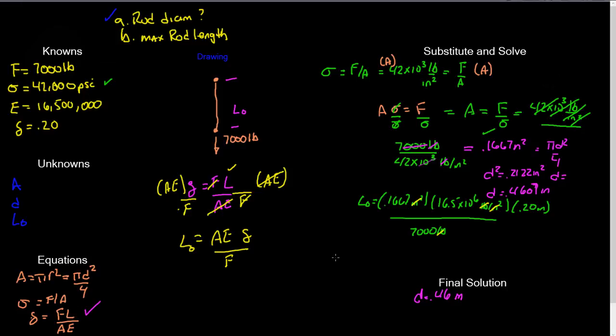So let's go ahead and solve that. I'll type that into my calculator: 0.1667 times 16.5 times 10 to the 6 times 0.2 divided by 7,000. Looks like I get a maximum rod length here of about 78.5 inches.